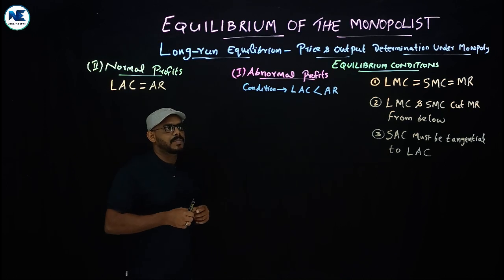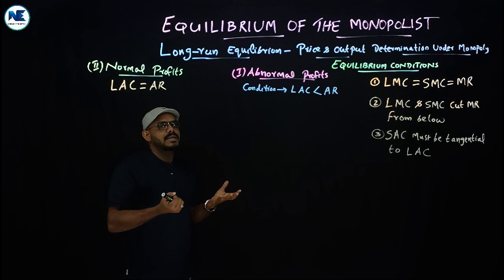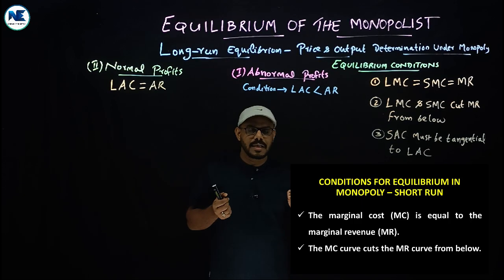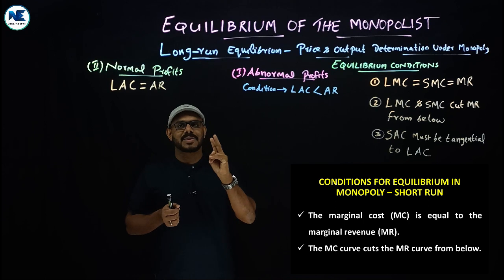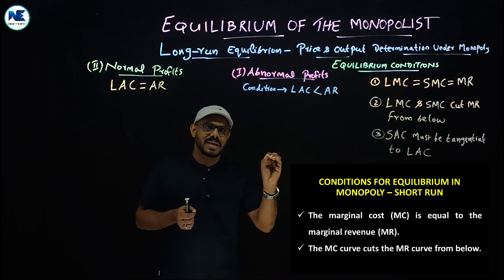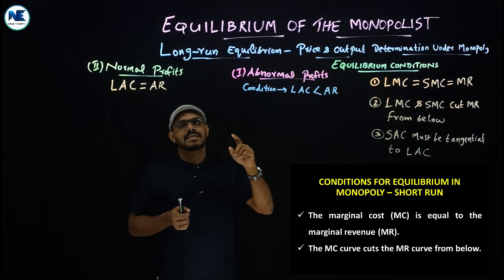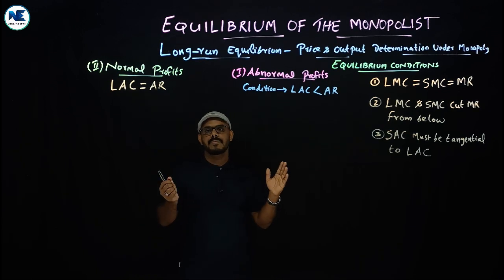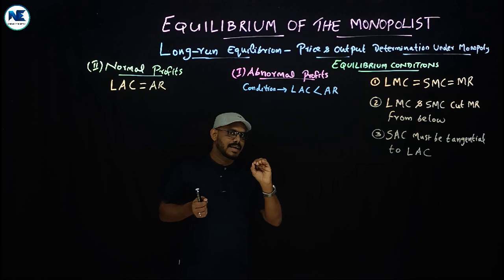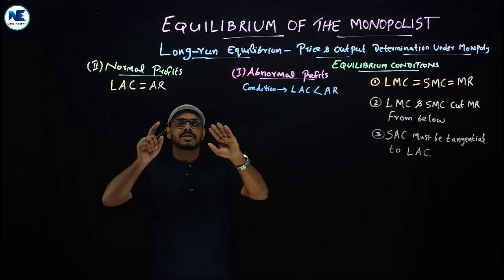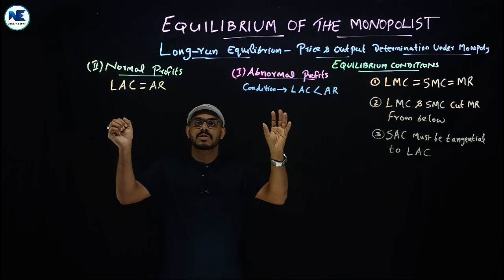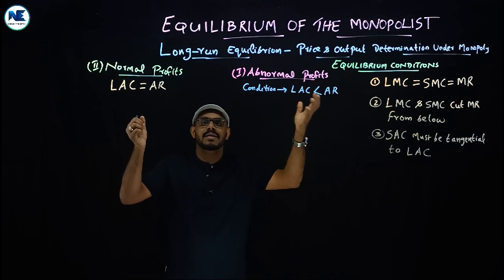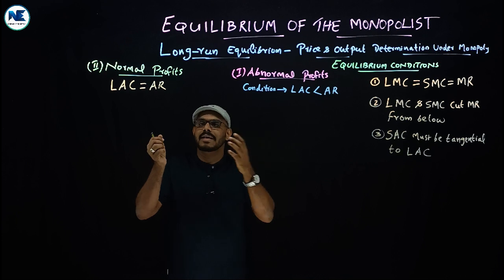The short-run equilibrium conditions are slightly different from long-run equilibrium conditions. In the short run, the equilibrium condition is MC equal to MR, and MC cuts the MR curve from below, meaning the slope of MC is greater than the slope of MR. In the short run there are possibilities of supernormal profit, normal profit, or loss.